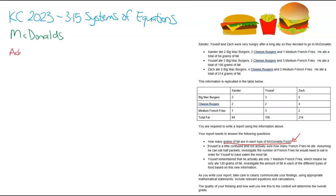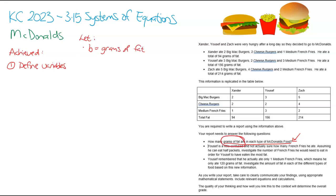The first thing we need to do for the achieved portion is define our variables - we need to say what each of our letters will represent in this particular scenario. You may use different letters: X, Y, Z, or B, C, F suggested by the food names. I've gone with B, C, F. So B equals the grams of fat in a Big Mac. That's really important because we've been asked to find the grams of fat. The most common issue is people say B equals the number of Big Macs, but we've actually been asked for the grams of fat, not the number of burgers. So there's no point solving for something you already know.